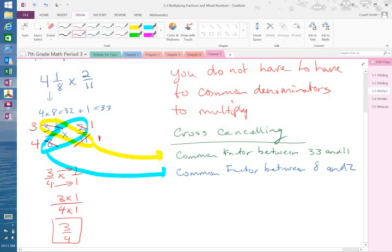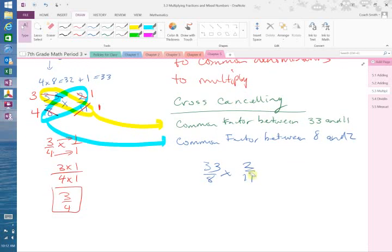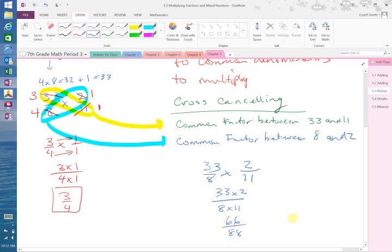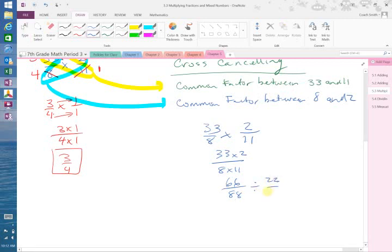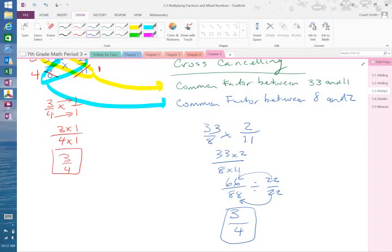Now, if I didn't cross-cancel, I would still eventually get the same answer, providing that I reduce the fraction properly. For example, if I had 33 over 8 times 2 over 11. If I just multiplied 33 times 2 and 8 times 11, that would give me 66 over 88. Well, I can reduce that by 22 over 22. 22 goes into that three times. 22 goes into that four times. So, one way or the other, you have to reduce it. Sometimes, it's just easier to do it with the cross-canceling instead of simplifying the fraction at the end. Either way is correct.